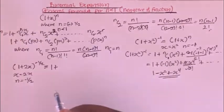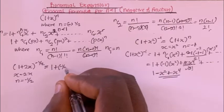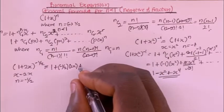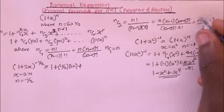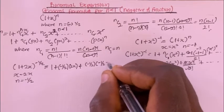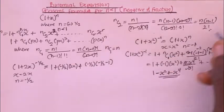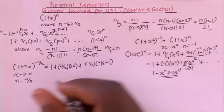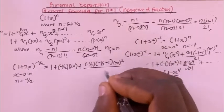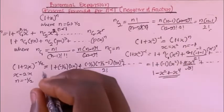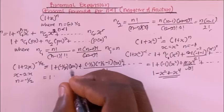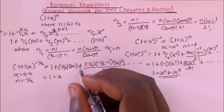So expanding: 1 plus nC1 times x, which is (−1/2)(2x), plus nC2 which is (−1/2)(−1/2 − 1) divided by 2!, times (2x) squared, plus other terms.